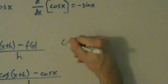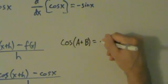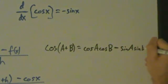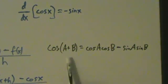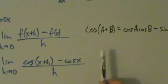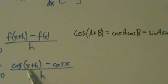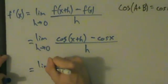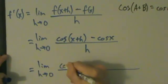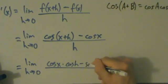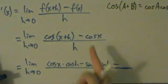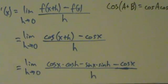Now we use another trig identity. This one is cosine of a plus b equals cos a times cos b minus sine a times sine b. Here we have x and h instead of a and b, but the point is the same. Applying this formula, we get the limit as h goes to 0 of cosine x times cosine h minus sine x times sine h, and then we still have this minus cosine x, all divided by h.